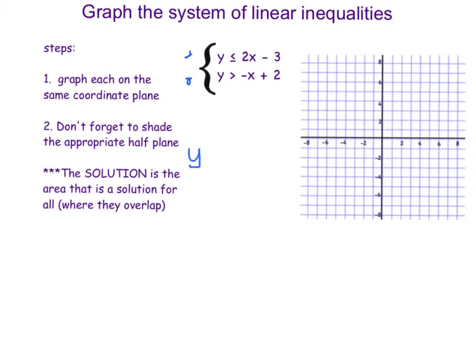So the first one, y is less than or equal to 2x minus 3. Here's my y-intercept. So I'm going to come down here to negative 3. Here's my slope. So I'm going to go up 2, over 1, up 2, over 1, or down 2, back 1, down 2, back 1. And if you are doing a paper copy of this, it might be a little simpler to draw the straight line with a ruler. I will try my best. It is going to be a solid line because it's a less than or equal to. So it's going to be about like that.